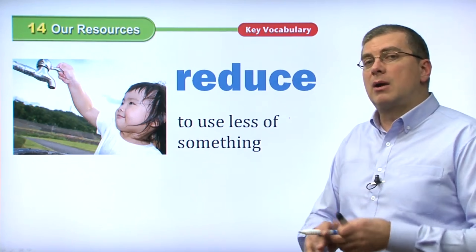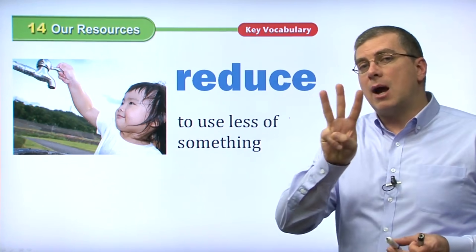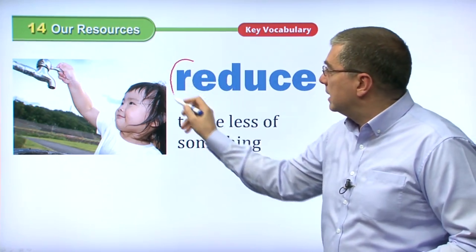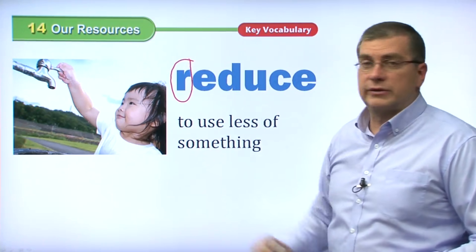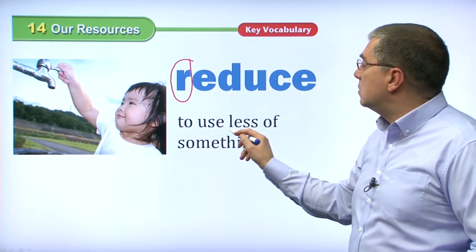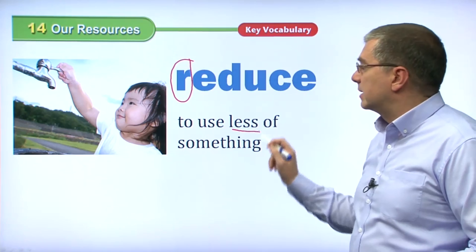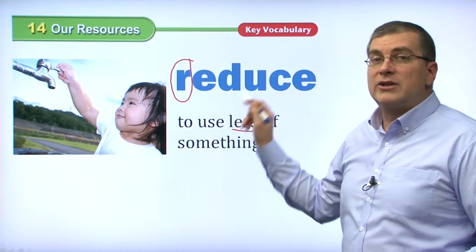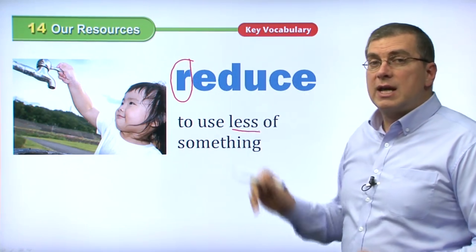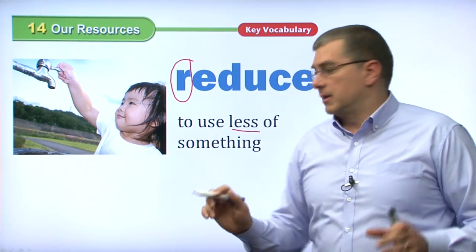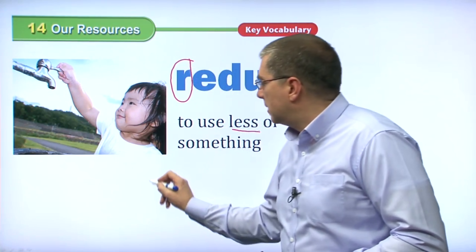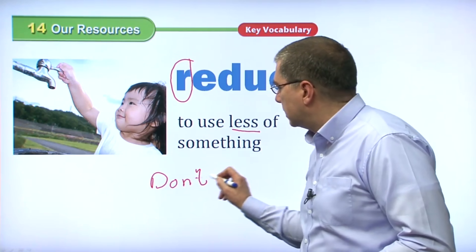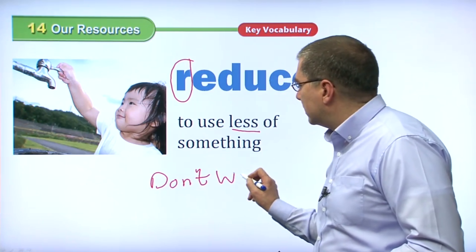We have to think about the three R's. The first R is reduce. Reduce means to use less of something. So our first R is reduce — that means don't waste things. Basically, don't waste our resources.